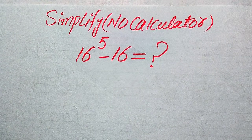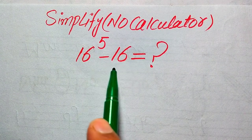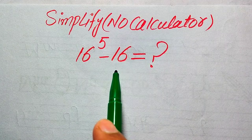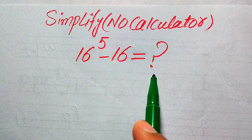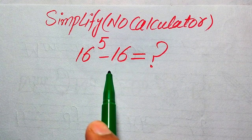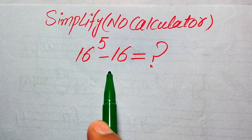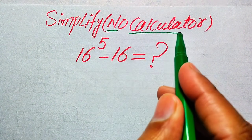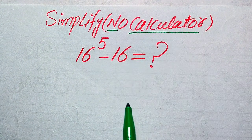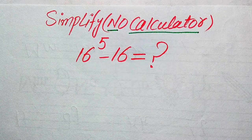Hello everyone. How to simplify this nice algebraic expression: 16 to the power of 5 minus 16 equals what? We can write this algebraic expression in simplified form, but remember that a calculator is not allowed in this problem. This means we need to show all of the working on paper.